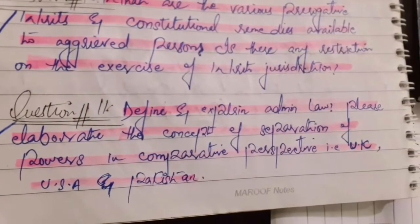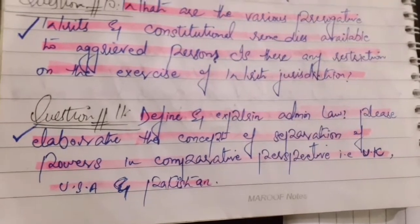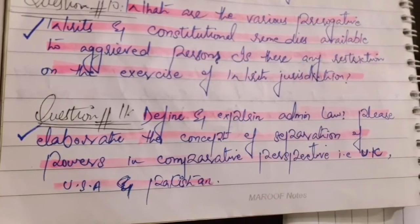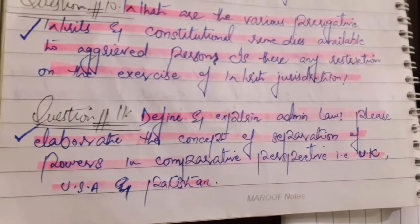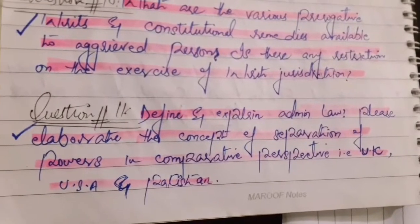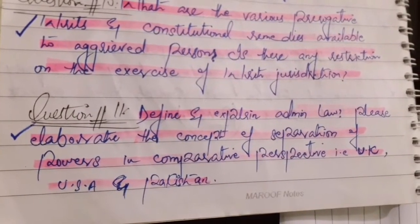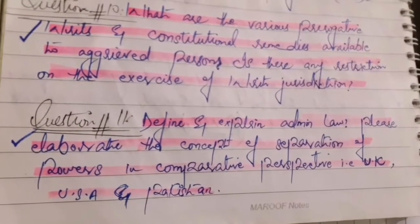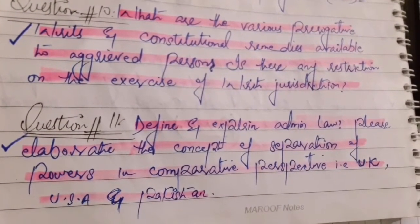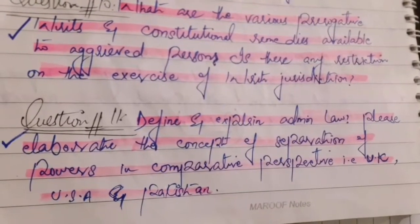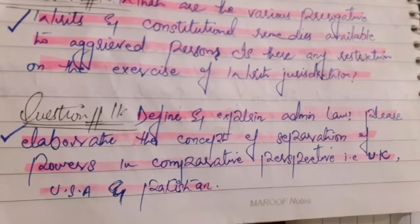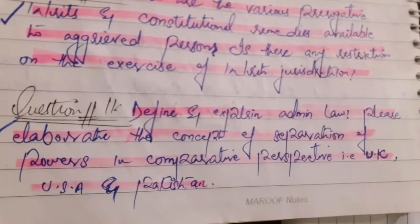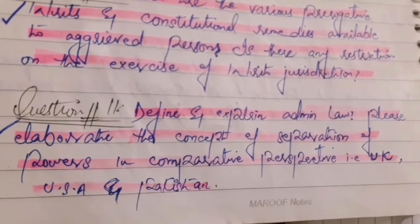Question number eleven: Define and explain administrative law. Please elaborate the concept of separation of powers - this is also a topic from LLB Part 1 in the UK constitution. Elaborate the concept of separation of powers in comparative perspective: UK, USA, and Pakistan. You have to define separation of powers and also discuss the differences between the UK, US, and Pakistan approaches.